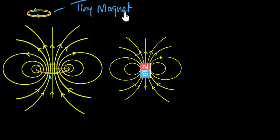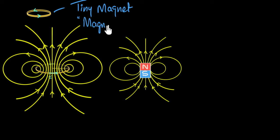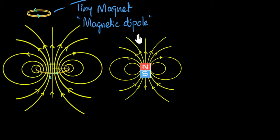Tiny magnet is not a very technical term. So technically, we say a current loop behaves like a magnetic dipole. That's the technical term for it, but it means the same thing.